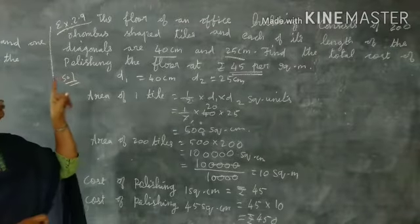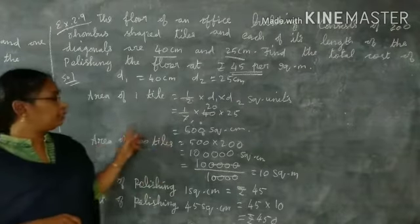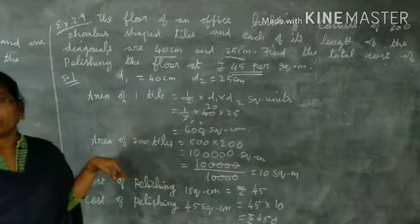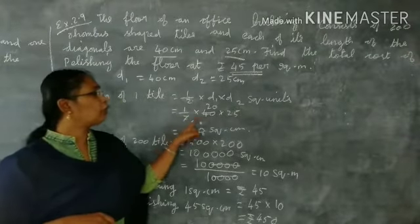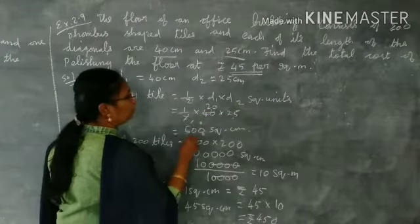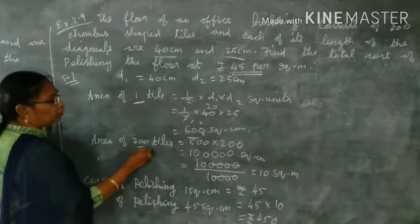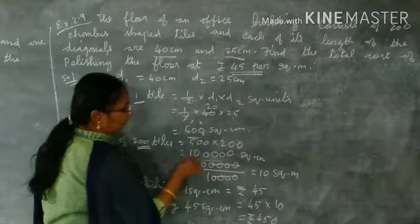First, find the area of one tile. D1 and d2. So take half into 40 into 50. Half into 40 into 50 equals 1000 square centimeters. So for 200 tiles, we multiply by 200. 200 into 1000 equals 200,000 square centimeters.